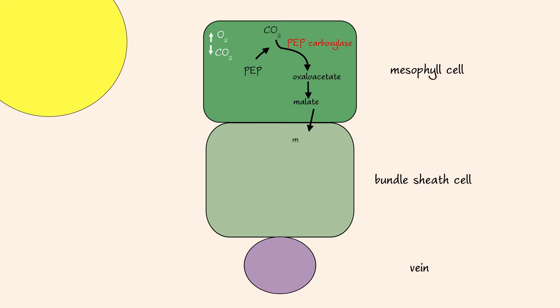Malate enters the bundle sheath cell and releases a carbon dioxide to become pyruvate. Pyruvate re-enters the mesophyll cell and is reconverted back into PEP with energy input from ATP. The purpose of this pathway is to concentrate carbon dioxide within the bundle sheath cell.